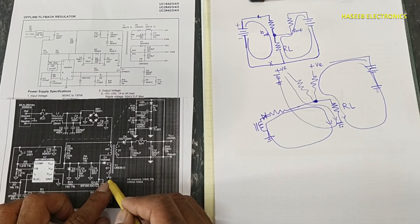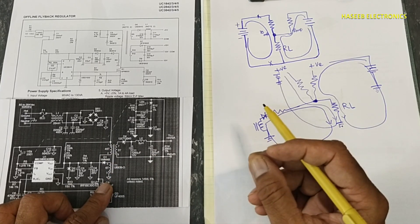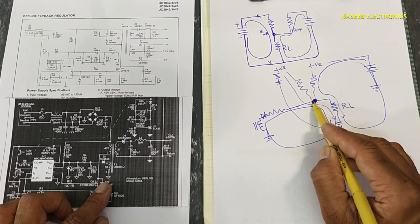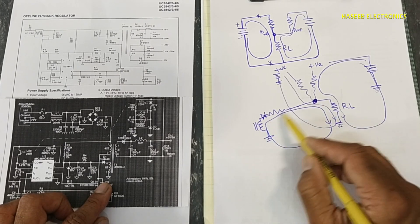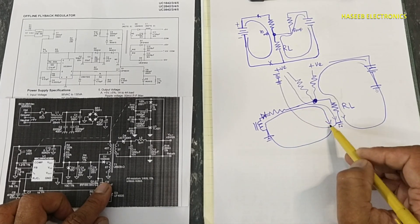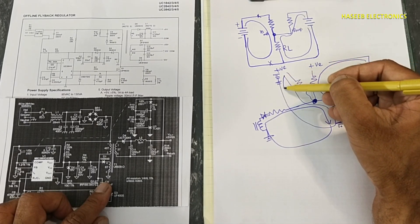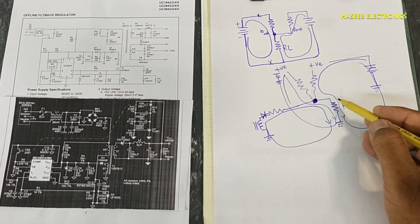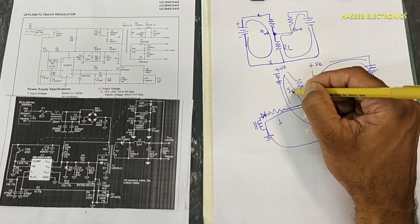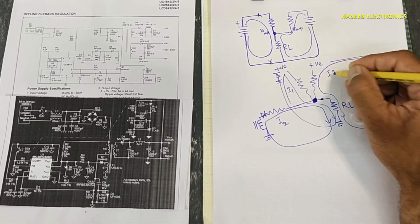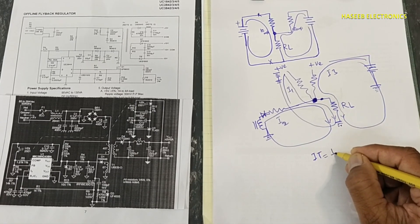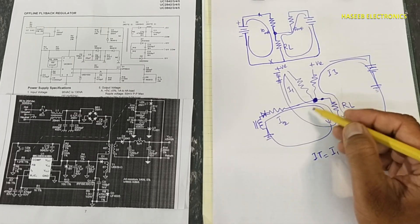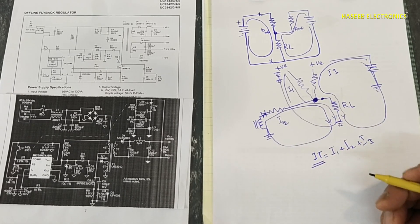Now if you see here, this ground and this ground are common. When we have a common reference point, each circuit will provide its current at the same node at this point. So its current will circulate in this path, and its current will circulate in this path. The sum of all currents will come to the same point: I-total equals I1 plus I2 plus I3.